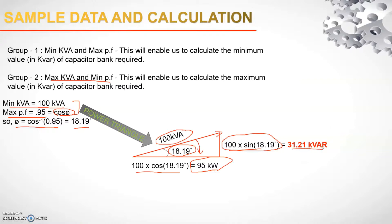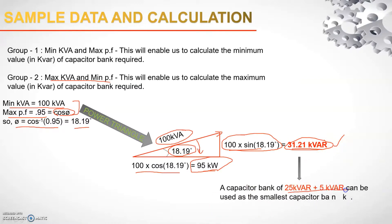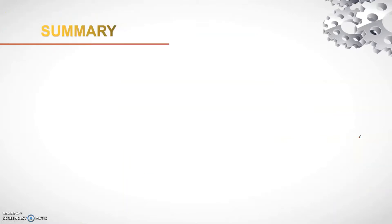At minimum kVA and maximum power factor, 31.21 KVAR is the least amount of reactive power to compensate. We select a capacitor bank close to but slightly less than this value. Using standard sizes, we connect a 25 KVAR bank plus a 5 KVAR bank in parallel on one channel of the reactive power manager, giving 30 KVAR — sufficient for minimum load power factor compensation.